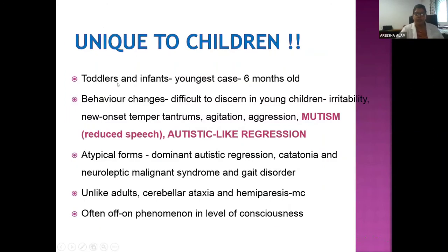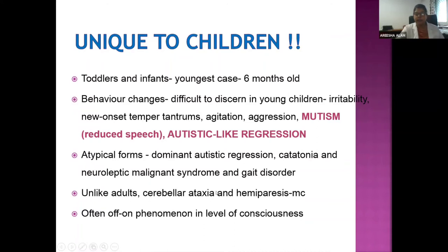What is unique to children: this disorder can occur in toddlers and infants — the youngest reported case is a 6-month-old. Behavior changes in young children are difficult to discern; they may present with simple irritability, new-onset temper tantrums, agitation, aggression, or mutism. Atypical forms include autistic-like regression (in a child who did not previously have autism), gait disorder, and cerebral ataxia — more common in children than adults — and intermittent fluctuations in level of consciousness.